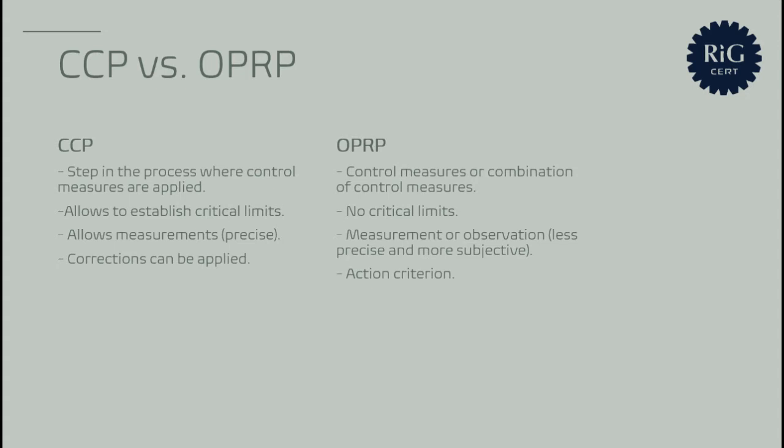Looking back at the pasteurization example from the previous video, pasteurization is a critical control point because it ticks all the boxes: it is a step in the process where controls are applied, where there are critical limits — 72 degrees for 15 seconds — and where measurements can be done and corrections can be applied if needed.